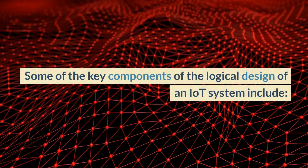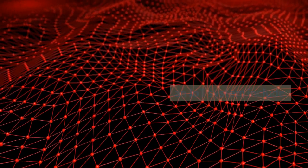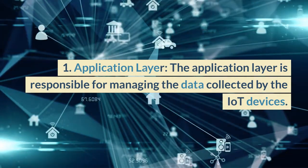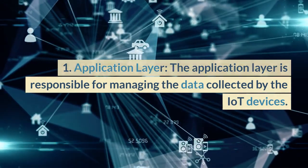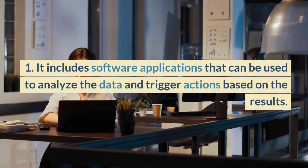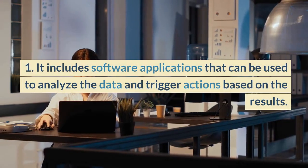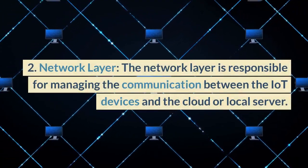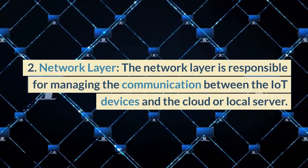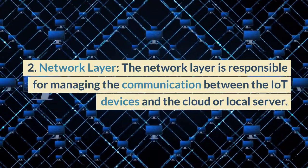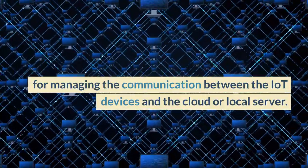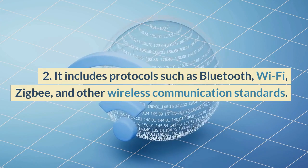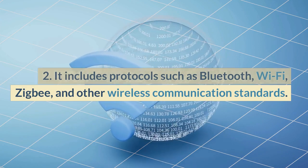Some of the key components of the logical design of an IoT system include: first, the application layer. The application layer is responsible for managing the data collected by the IoT devices. It includes software applications that can be used to analyze the data and trigger actions based on the results. Second, the network layer. The network layer is responsible for managing the communication between the IoT devices and the cloud or local server. It includes protocols such as Bluetooth, Wi-Fi, ZigBee, and other wireless communication standards.